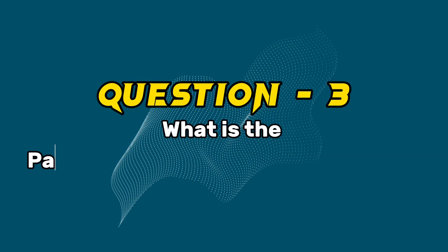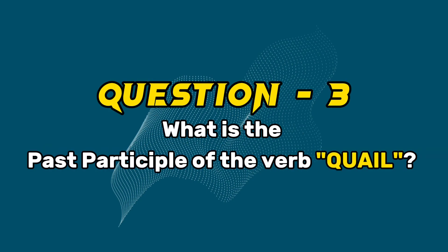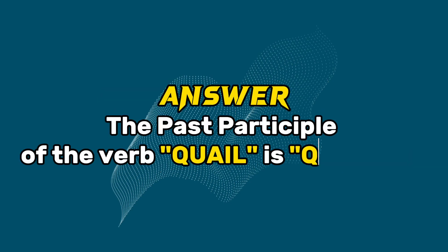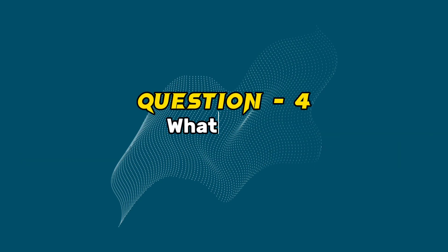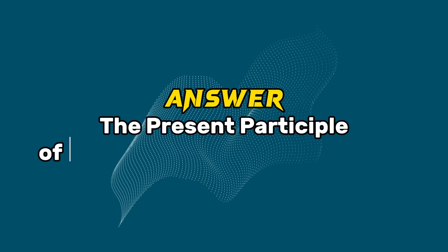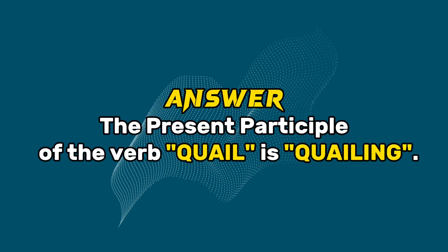Question 3: What is the past participle of the verb Quail? Answer: The past participle of the verb Quail is Quailed. Question 4: What is the present participle of the verb Quail? Answer: The present participle of the verb Quail is Quailing.